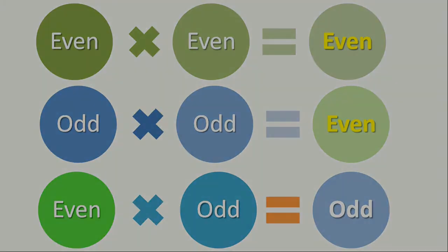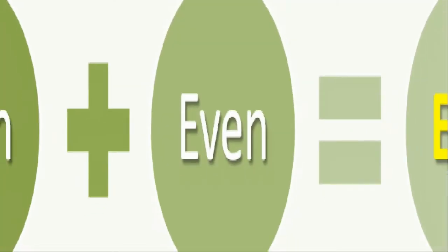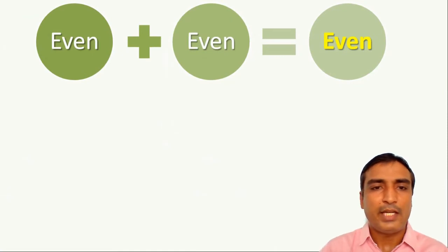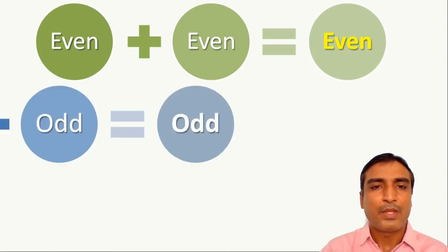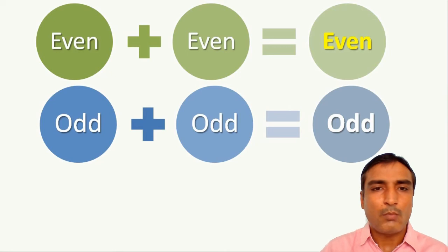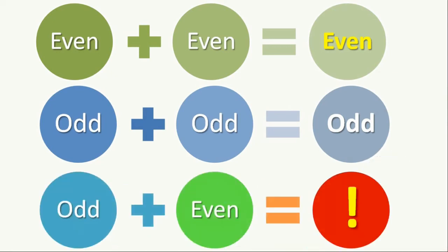Let us now consider the sum of two even signals. The sum of two even signals will be an even signal. On the other hand, the sum of two odd signals will be an odd signal. However, the sum of an odd signal and an even signal will neither be even nor odd.